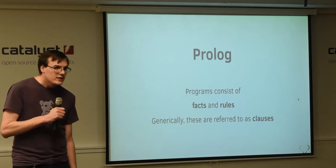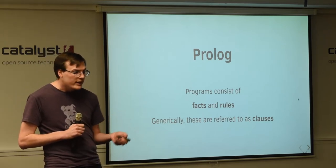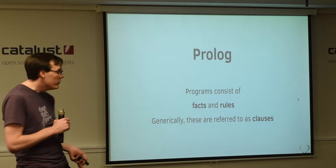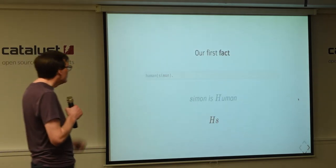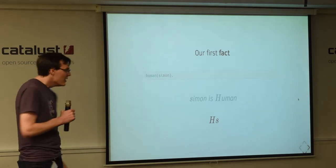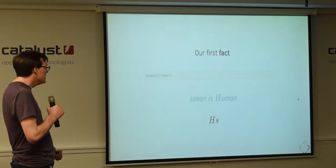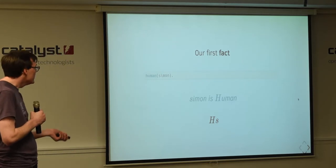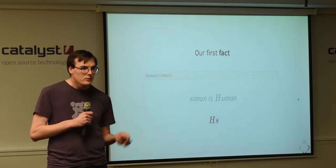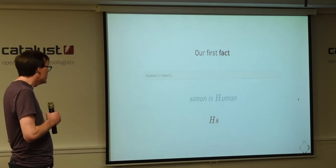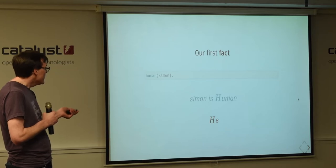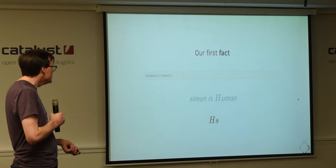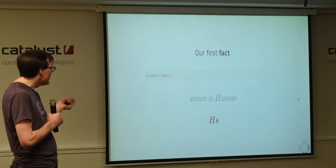So, prolog programs consist of facts and rules. And those facts and rules are like predicates. Generically, we can refer to facts and rules as clauses. That's like an umbrella term for them. So, we'll look at our first fact, which is Simon is a human. Now, we'll just assert that and assume it's true. At the bottom, I've put the predicate notation. But in the middle of the screen there is how we would express that as a prologue program. So, the predicate and the object in prologue, we call these constants. Simon is human. And note that in prologue, this fact ends with a full stop.